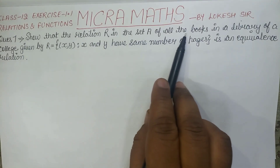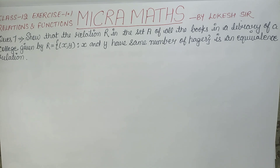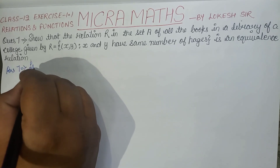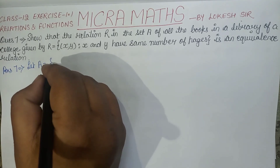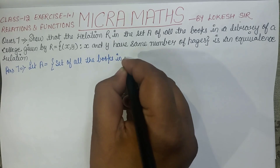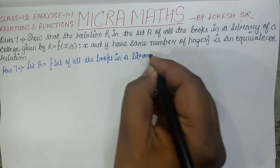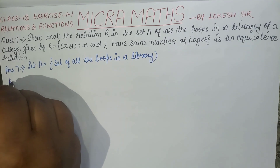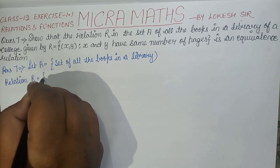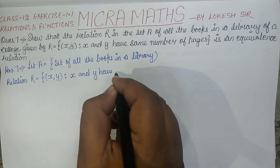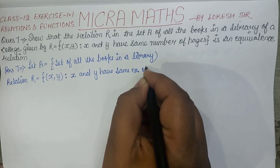Our next question is: show that the relation R in set A of all the books in a library of a college, given by R = {(X, Y) : X and Y have the same number of pages}, is an equivalence relation. Let A be the set of all the books in a library, and the relation R states that X and Y are two books such that X and Y have the same number of pages.